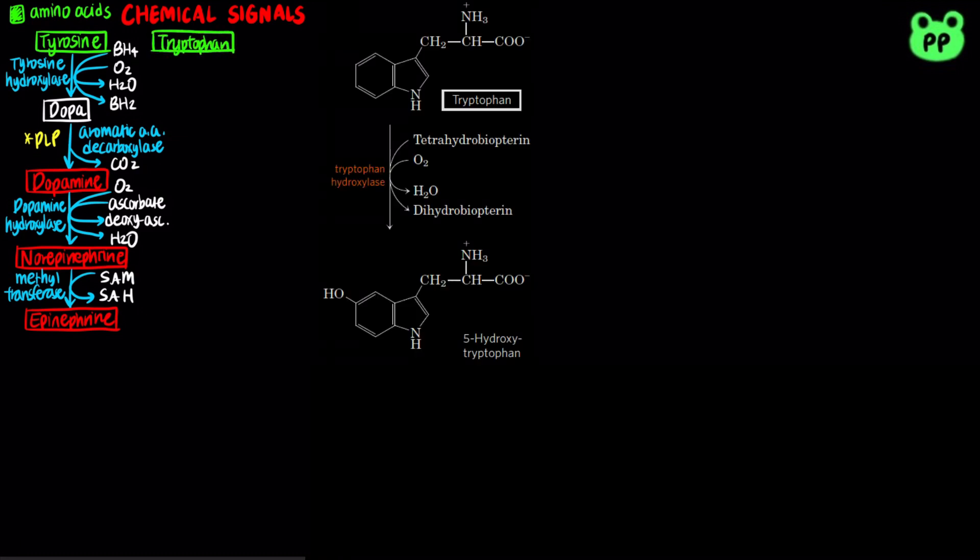On the other hand, tryptophan can undergo hydroxylation by tryptophan hydroxylase to form 5-hydroxytryptophan. This reaction is analogous to tyrosine hydroxylase, which is coupled to the reduction of oxygen to water and the oxidation of tetrahydrobiopterin to dihydrobiopterin.